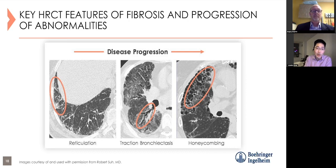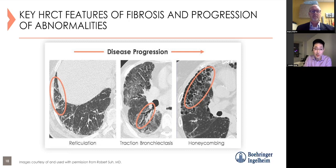End-stage pulmonary fibrosis is represented by honeycomb cysts—fibrotic subpleural cysts that either line up in rows or stack upon each other. This is one of the most specific findings of usual interstitial pneumonia on HRCT. Once you have your major pattern and distribution, you subcategorize using the UIP classification system supported by multiple pulmonary societies—both ATS multi-society guidelines and the Fleischner Society classification exist, and they're almost exactly the same.